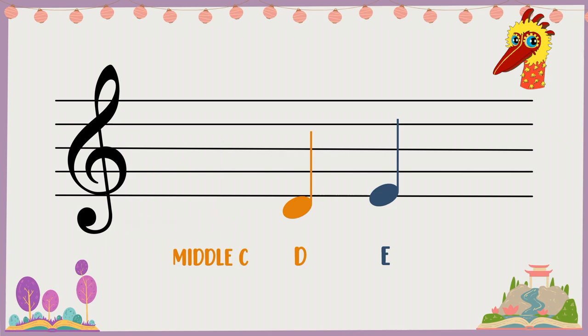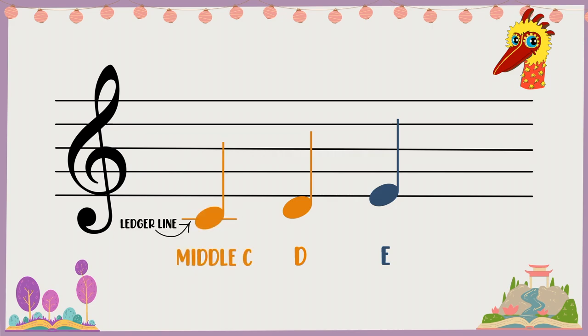Draw a ledger line. Draw a note on it. And voila! You have middle C. I see it now!